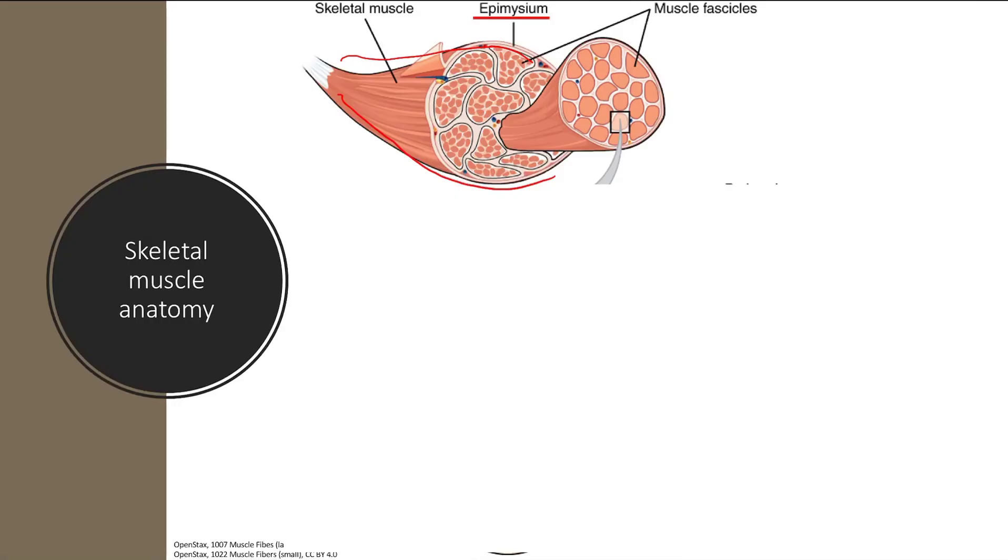And there's a nice wrapper for this biceps. It's called the epimysium. Just remember epi, peri, endo - we're going to see that a lot. Because this skeletal muscle is made up of muscle fascicles. So whole muscle, muscle made up of fascicles.